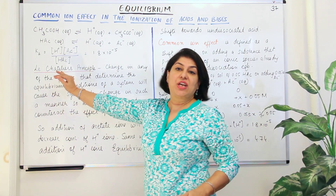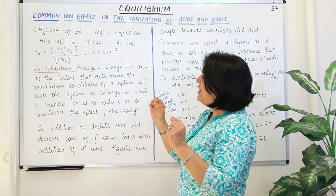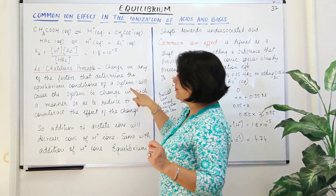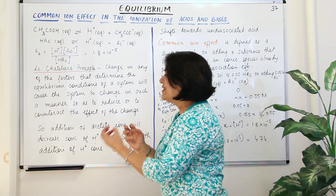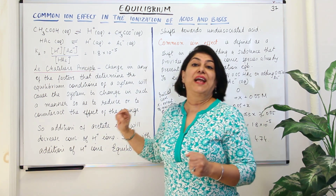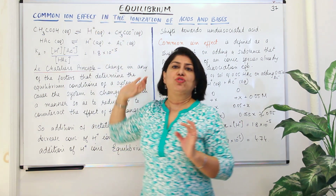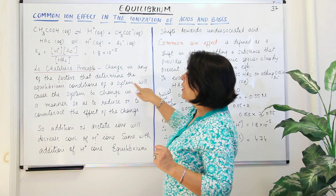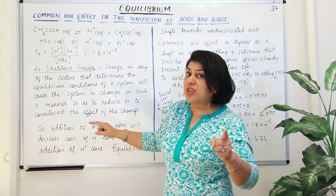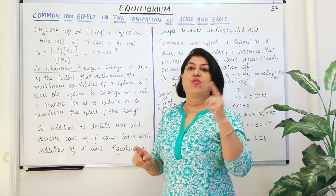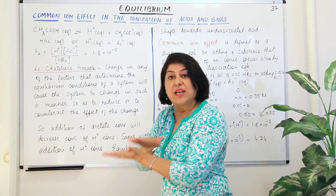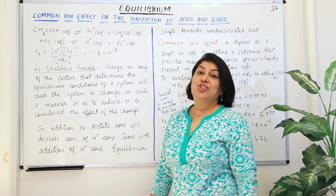The change in any of the factors that determine the equilibrium conditions of a system will cause the system to change in such a manner so as to reduce or counteract the effect of that change. If any change is brought about to the equilibrium, the system will change so that it nullifies or counteracts the effect of that disturbance.